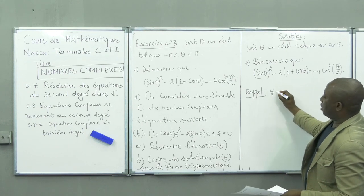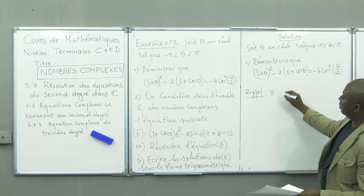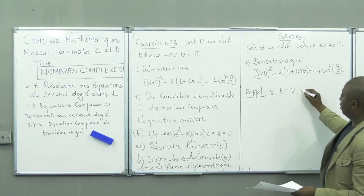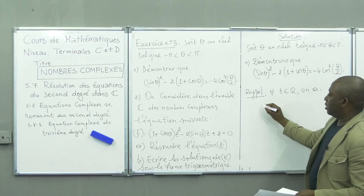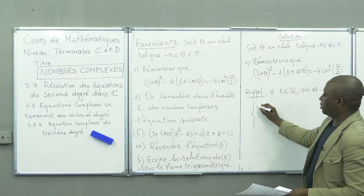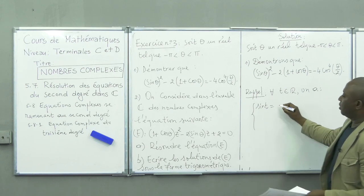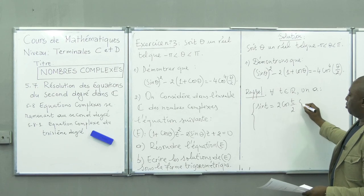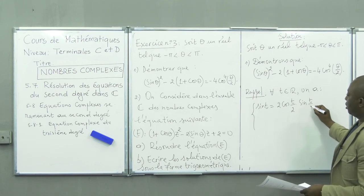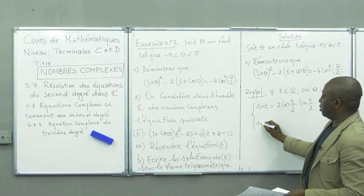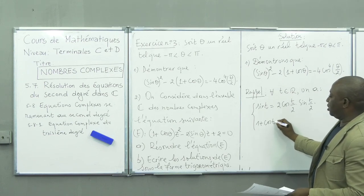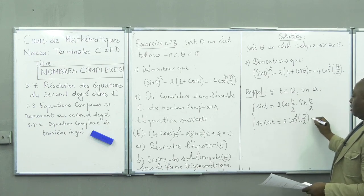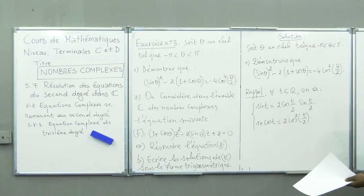Rappel : quel que soit T ∈ ℝ, on a sin T = 2cos(T/2)·sin(T/2), et 1 + cos T = 2cos²(T/2). Nous allons partir sur la base de ces deux formules.